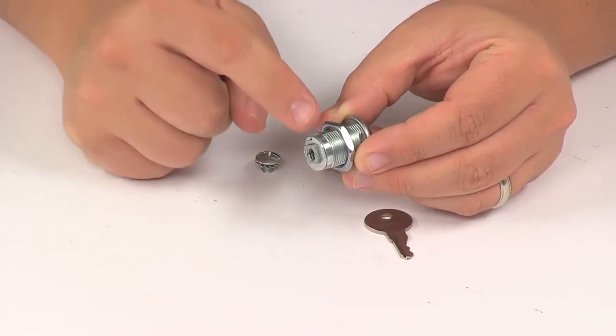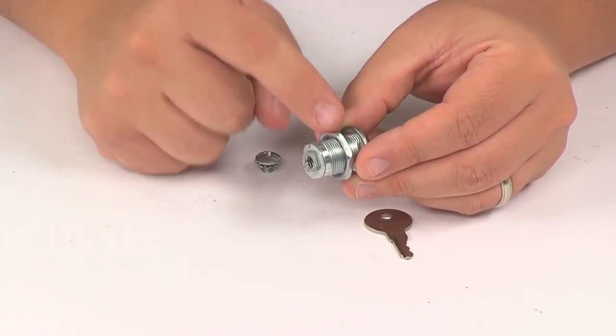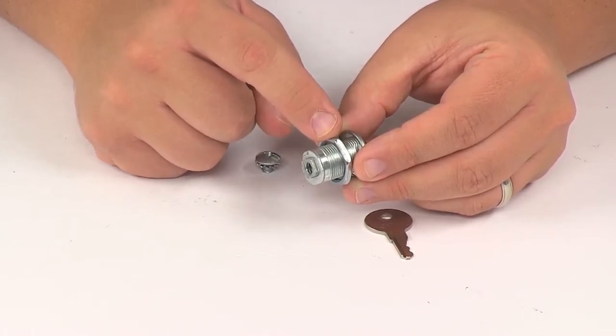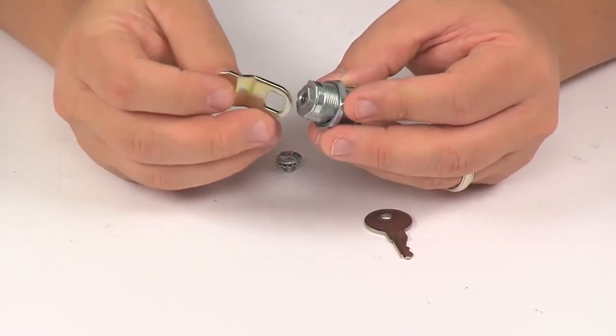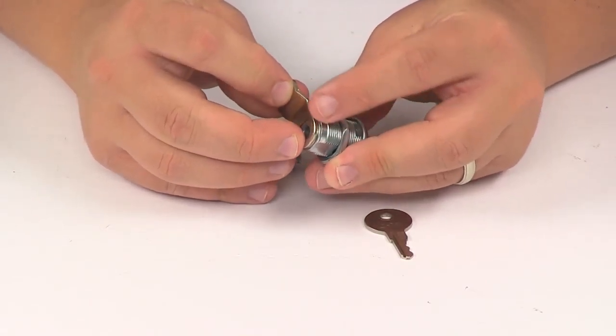It's a simple installation. You want to remove your old lock core from your hatch door, place in your new cylinder, and thread the nut on for a secure fit. Get it all the way tightened down.